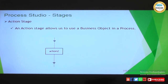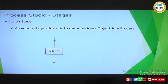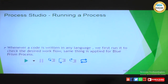The Action stage — for now we will just park it. This allows you to use a business object in a process. As I was telling you, an Excel object has a Read action and a Write action. Once we configure objects in Object Studio, you will be able to use those actions inside the process by using this Action stage. From a theoretical perspective, the Action stage maps to an action in an object to interact with an application.